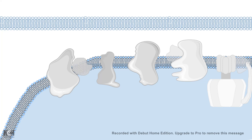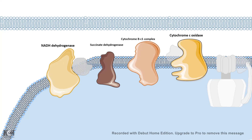There are four different complexes: NADH dehydrogenase, or complex 1; succinate dehydrogenase, or complex 2; cytochrome BC1 complex, or complex 3; and cytochrome C oxidase, or complex 4. In between these complexes, there are several electron carriers, such as coenzyme Q and cytochrome C.